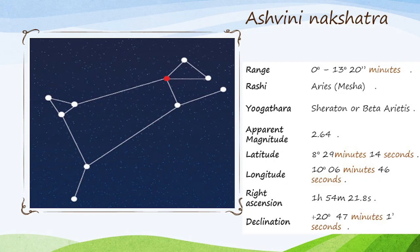Ashwini Nakshatra Range: 0 to 13 degrees 20 minutes. Rashi: Aries, Mesha. Yogathara: Sheratan or Beta Arietis. Apparent Magnitude: 2.64. Latitude: 8 degrees 29 minutes 14 seconds. Longitude: 10 degrees 06 minutes 46 seconds. Right Ascension: 1 hour 54 minutes 21.8 seconds. Declination: +20 degrees 47 minutes 1 second.